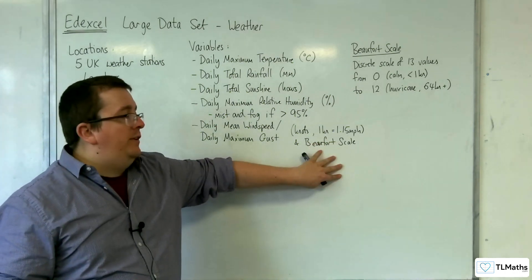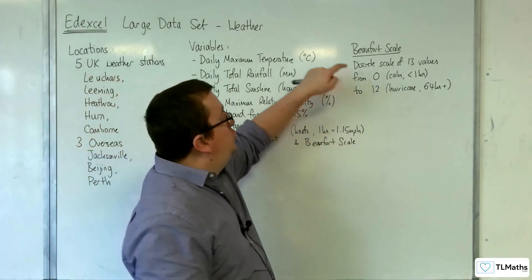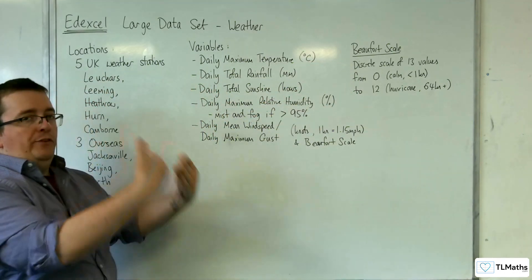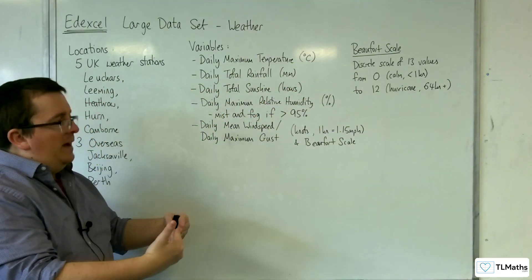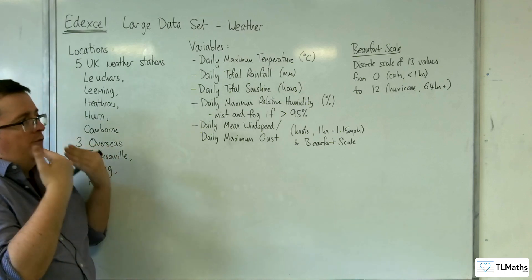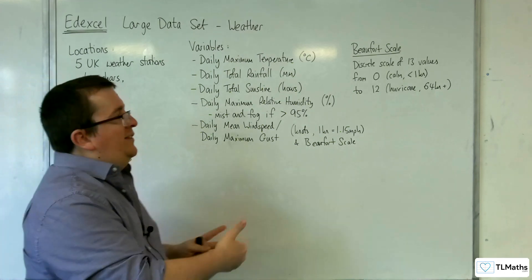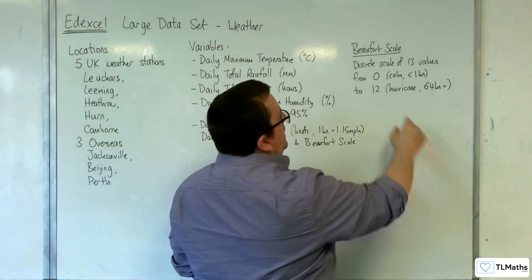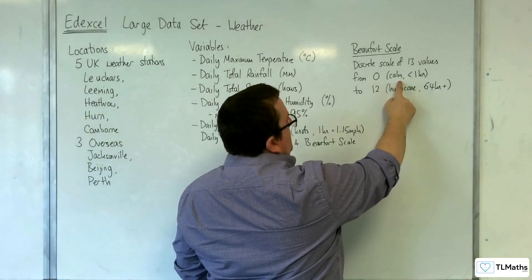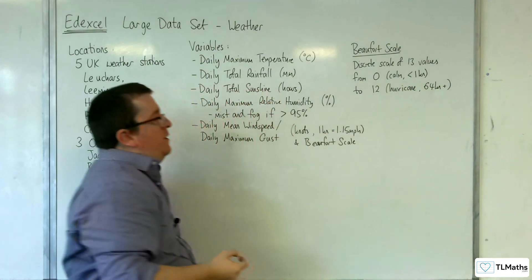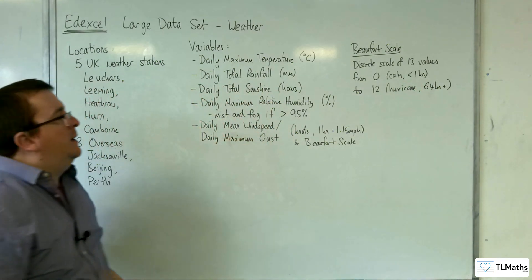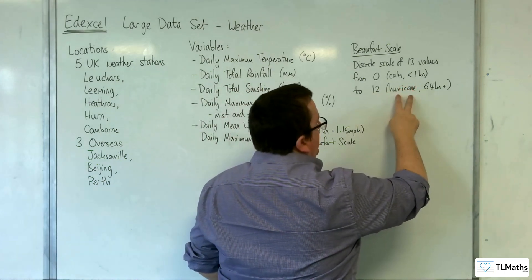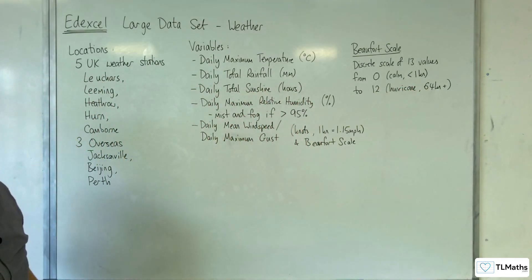Wind speed is also measured on the Beaufort scale, which is a discrete scale of 13 values going from 0 up to 12. That means you don't have a value of 1.5, for example — you can only take values 0, 1, 2, 3, 4, 5, 6, 7, 8, 9, 10, 11, 12. Where 0 is registered as calm — that's under 1 knot for the mean wind speed or maximum gust — and 12 is hurricane level, which is 64 knots or above.